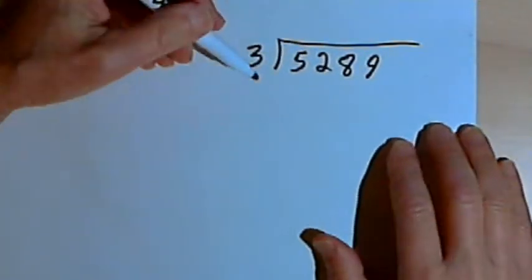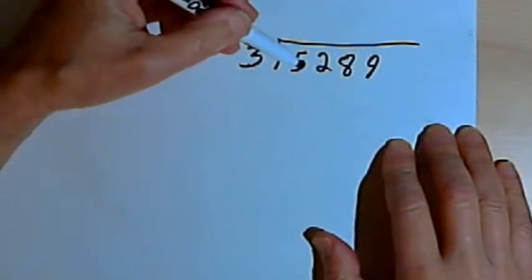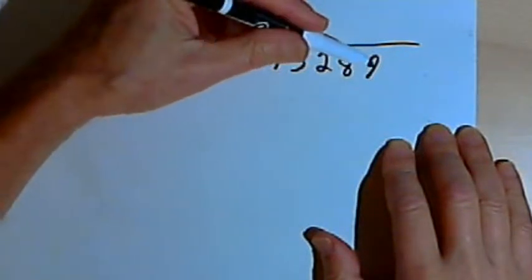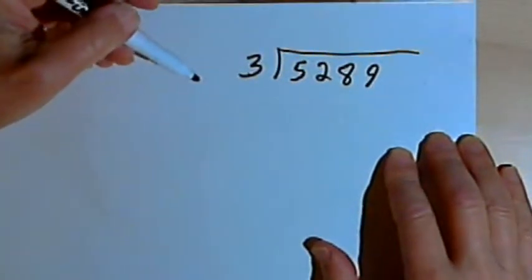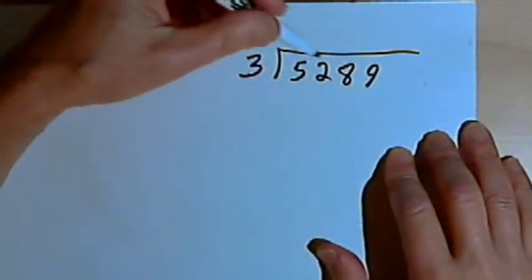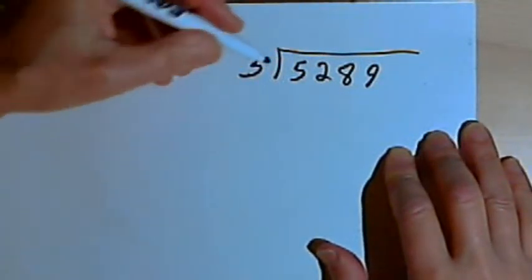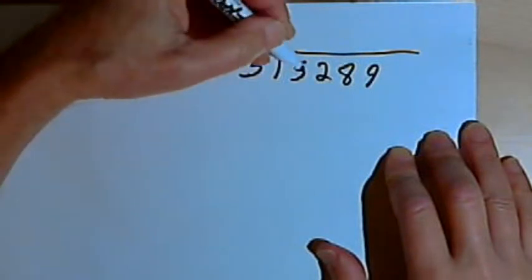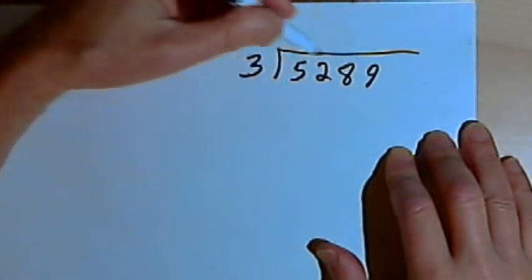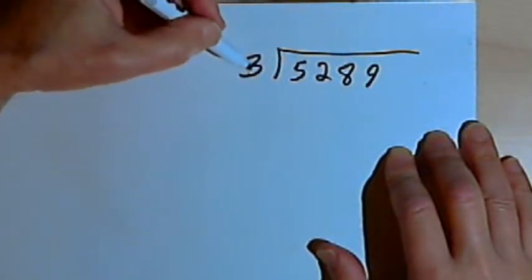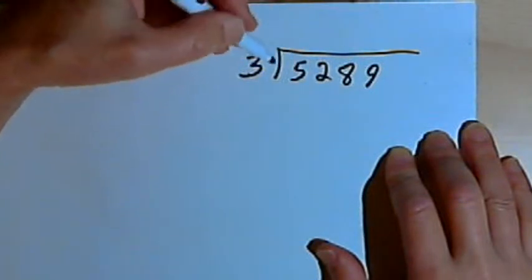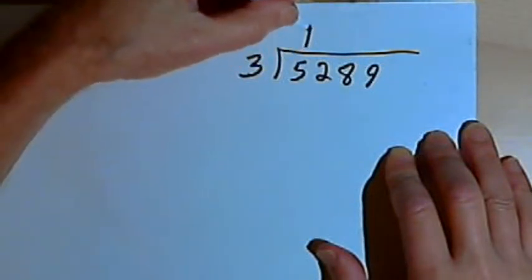Here I've got this division problem: 3 divided into 5,289. Now I'm going to do this by the long division method, and then we'll do short division and compare the two methods. So I've got this 3, I'm dividing it into 5,289. I'll take this 3 and divide it into the first digit I've got. So 3 goes into 5 one time.